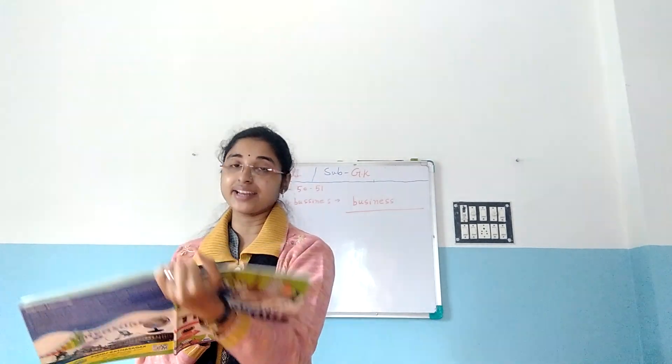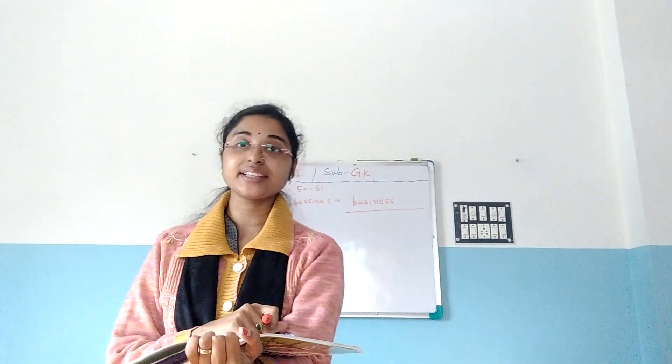Number 4: Bridge. The wrong spelling is B-R-I-G-E. The correct spelling is B-R-I-D-G-E. Number 5: Ninety (90). The wrong spelling is N-I-N-T-Y. The correct spelling is N-I-N-E-T-Y. 90.